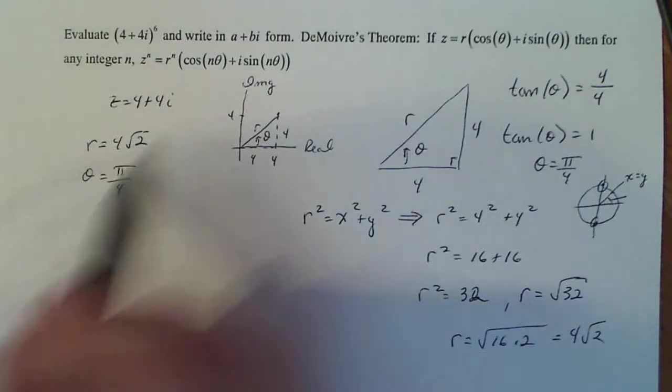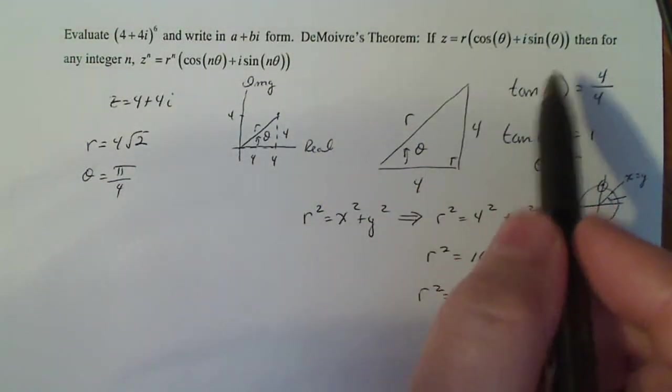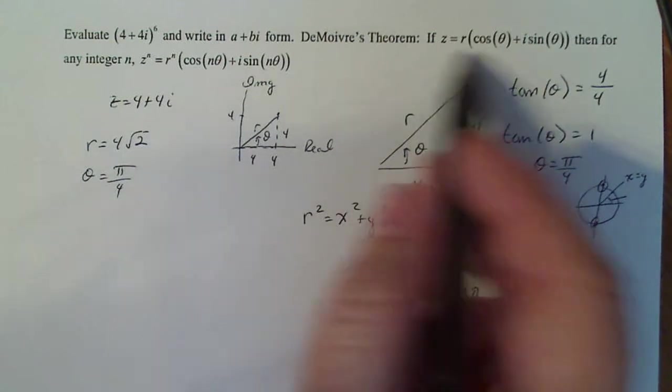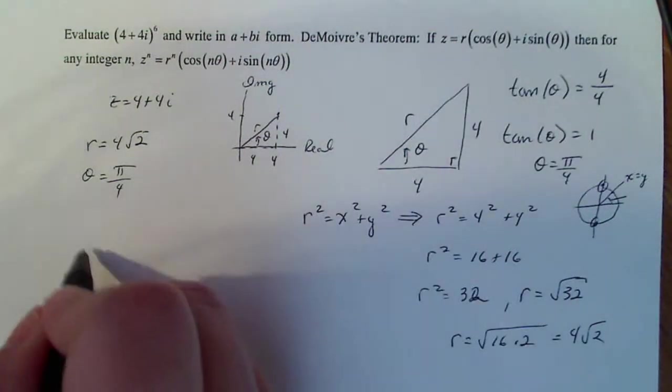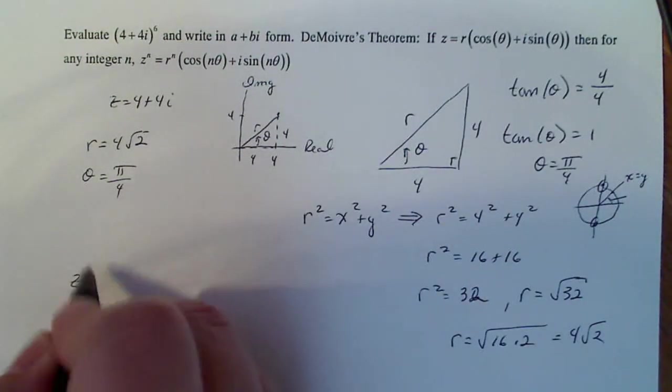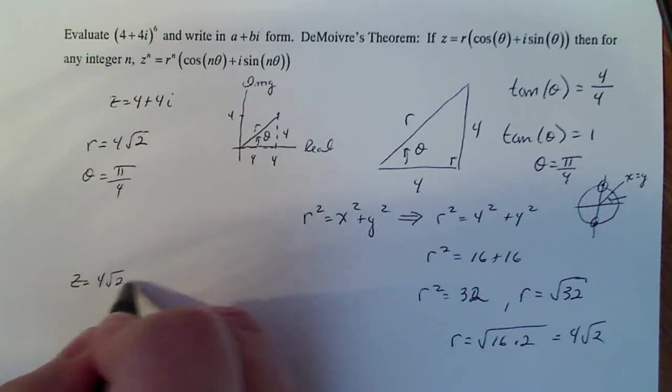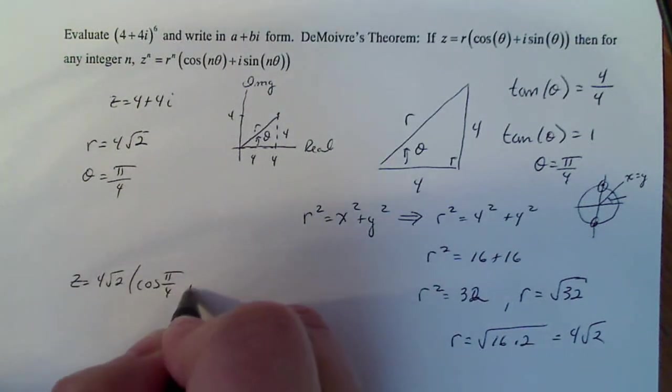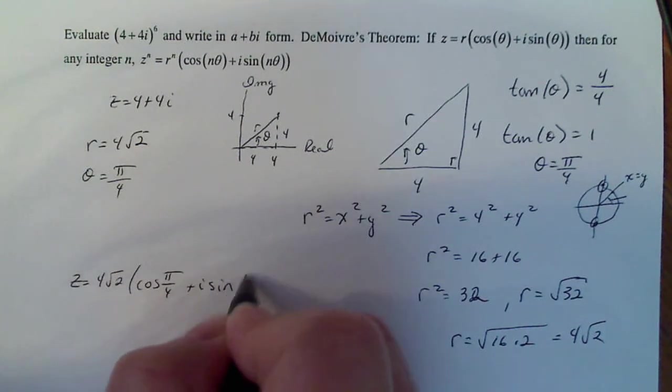All right, now I have my two numbers, so I'm going to use DeMoivre's theorem here. And I'm going to, well, let's first write z in polar form. So z is now equal to 4 square root of 2, cosine pi over 4, plus i sine pi over 4.